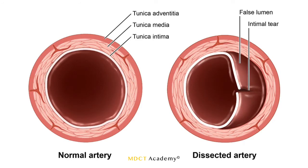Now let's talk about carotid dissection. Using the same vessel anatomy, if you have a dissection it is a tear of the intima. That tear creates a channel or false lumen where blood from the true lumen — pumped by the heart — passes through the intimal tear and creates its own false lumen. Two things can happen: the false lumen can remain active with an inlet and outlet, or the blood inside becomes very slow-moving and can become thrombotic.